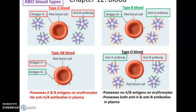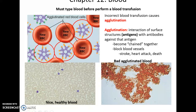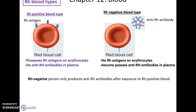You've got to be careful with blood transfusions. Incorrect transfusions lead to agglutination — the antibodies that are present bind to the antigens on the foreign erythrocytes, causing agglutination, a clumping up of the blood cells. These clumps can then block blood vessels, leading to strokes, heart attack, and even death.